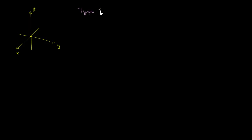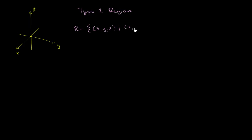The first type of region we will call a Type 1 region. I'll give a formal definition — hopefully it makes some intuitive sense. A Type 1 region R is the set of all x, y, and z's — all points in three dimensions — such that the x and y's are a member of some domain D.